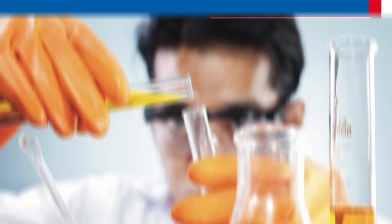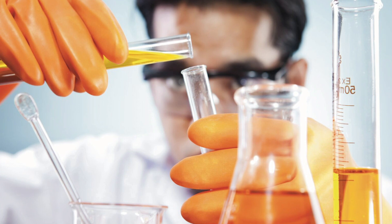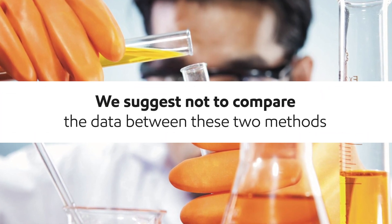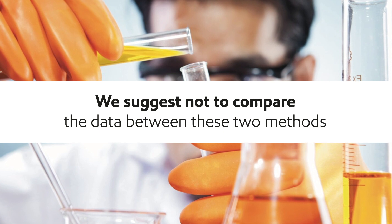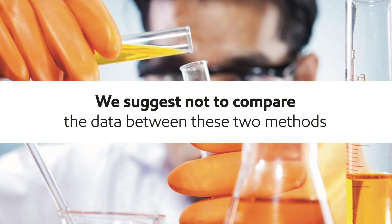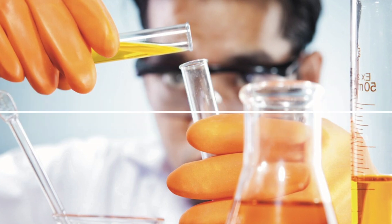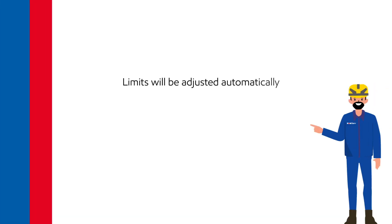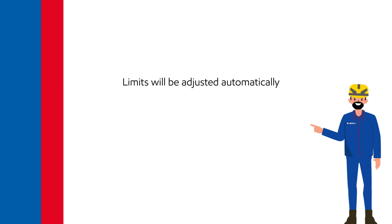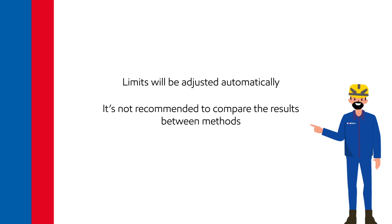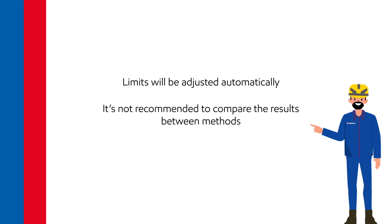Also, due to the differences between the methods, it's important to note that it is difficult to compare the data between these methods because each type of lubricant will have a different comparison depending on the components within the oil. As MobileServe transitions to direct trending, to allow for a seamless transition, limits will be adjusted automatically based on the new method and lubricant type, and samples will be moved to the new method based on asset class and site.